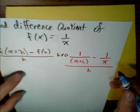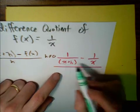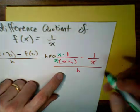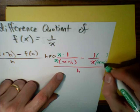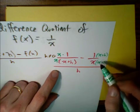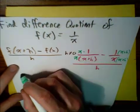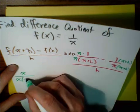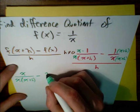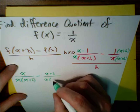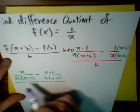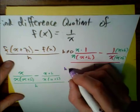To simplify this, we need a common denominator. The common denominator of x plus h and x is x times the quantity x plus h. So we multiply the left-hand fraction by x over x, and the right-hand fraction by the quantity x plus h over x plus h — both are forms of 1. This gives us x over x times the quantity x plus h, minus the quantity x plus h over x times the quantity x plus h, all over h. And h cannot equal 0.